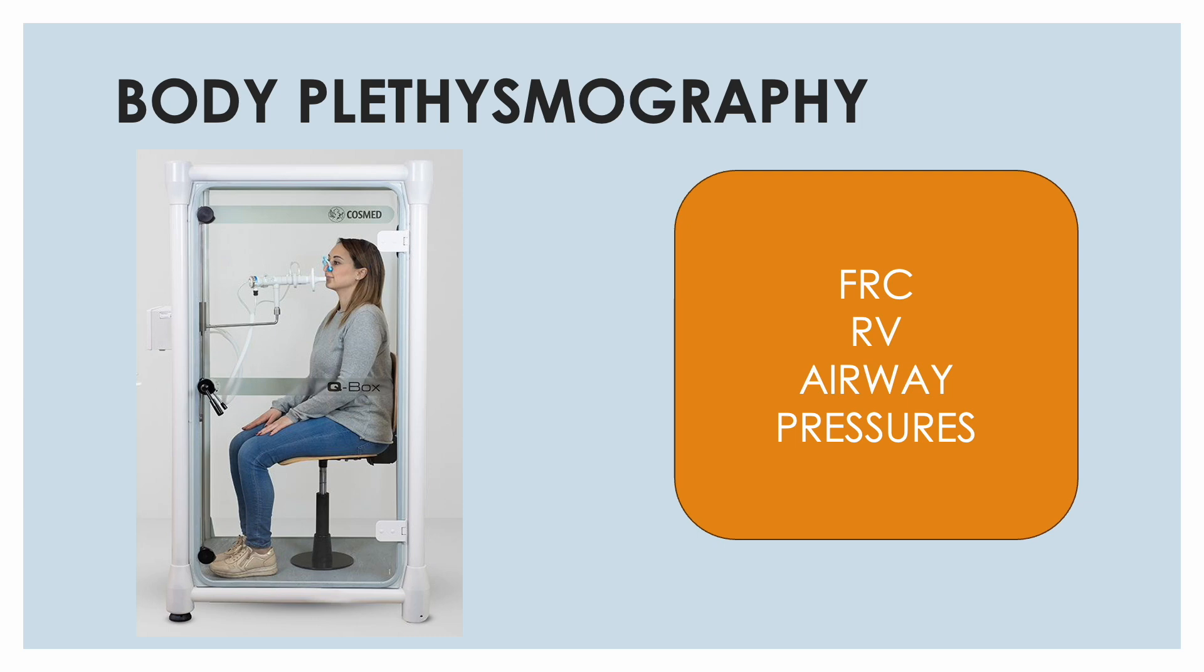Now this is the best measure to ascertain the functional residual capacity, the residual volumes, the airway resistance and the pressures. So we can derive a lot of parameters like the residual volume, the total lung capacity, but we can also find the airway resistance through this method.